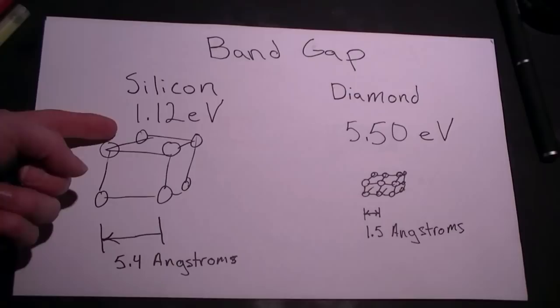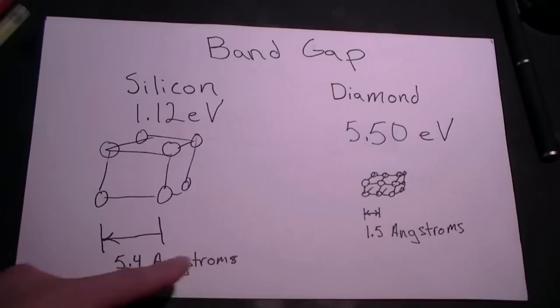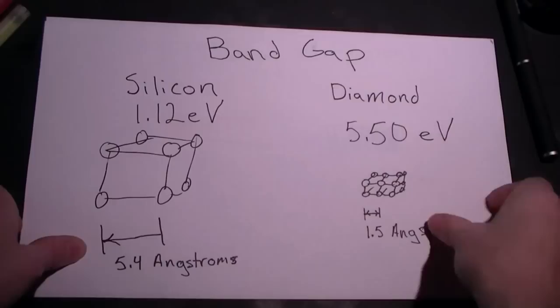Diamond, on the other hand, is well above the visible spectrum, so all light in the visible spectrum will pass right through. Materials with a very high band gap are excellent insulators, and materials with no band gap are conductors, and everything between is a semiconductor.